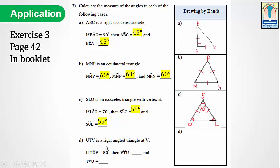D: UTV is a right-angled triangle at V. If TUV equals 50 degrees, what is the measure of VTU and TVU? We will draw this triangle. VTU plus 90 degrees plus 50 degrees equals 180 degrees. VTU plus 140 degrees equals 180 degrees. VTU equals 180 degrees minus 140 degrees. VTU equals 40 degrees. And TVU is a right angle, so its measure is 90 degrees.